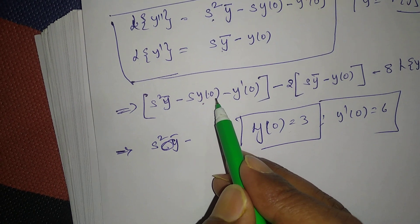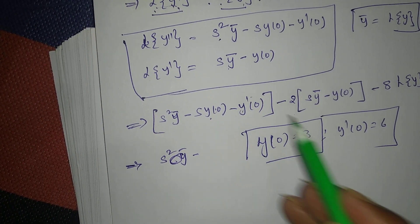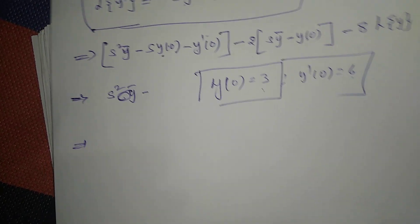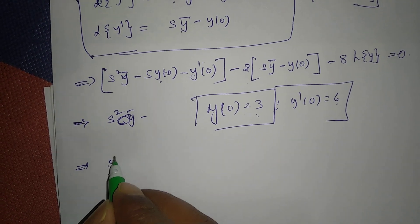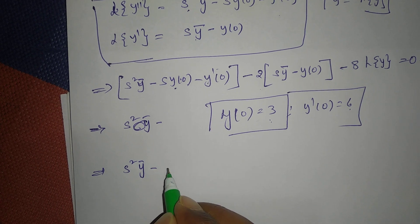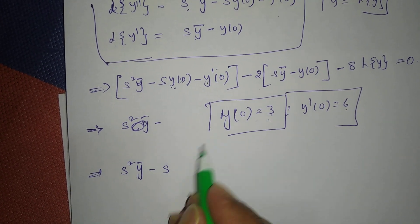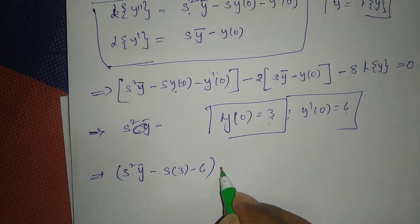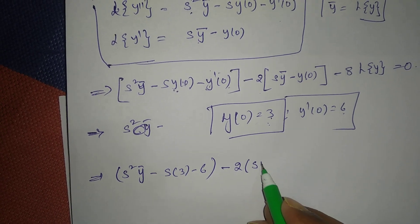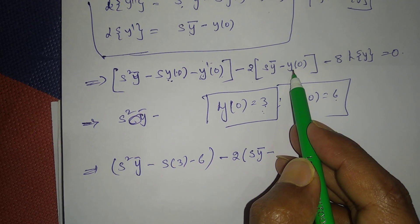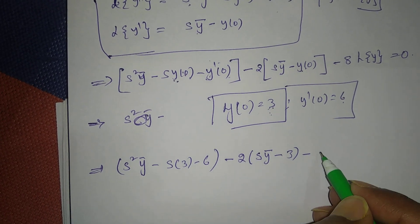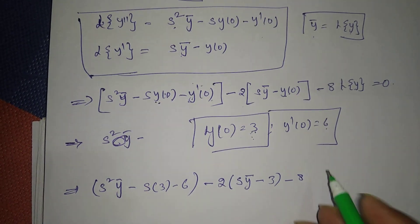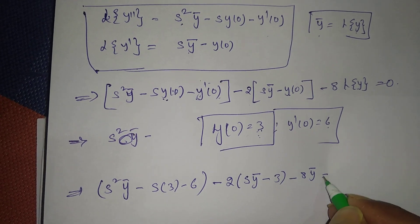Substituting the initial conditions — y(0) = 3 and y'(0) = 6 — we get: S²·ȳ - S·(3) - 6 - 2·[S·ȳ - 3] - 8·ȳ = 0.